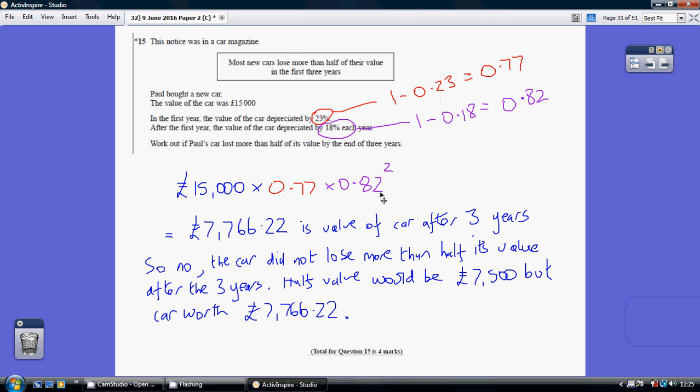For year three we also multiply by 0.82, or in other words we're multiplying by 0.82². All of that popped into your calculator gives you a value of £7,766.22.